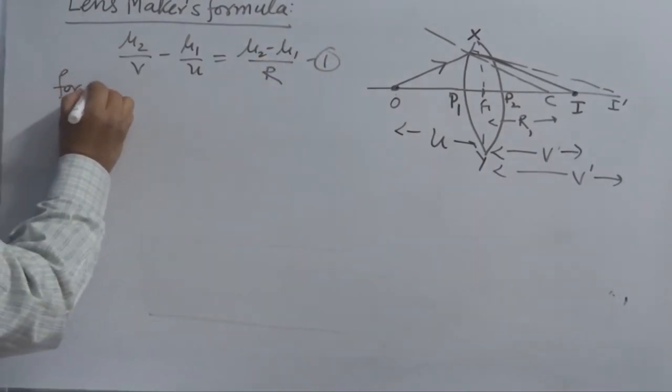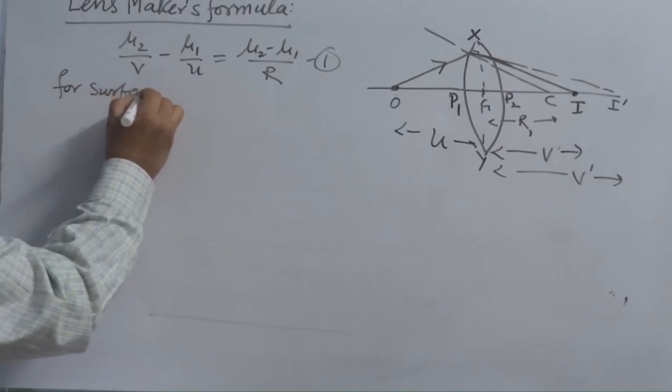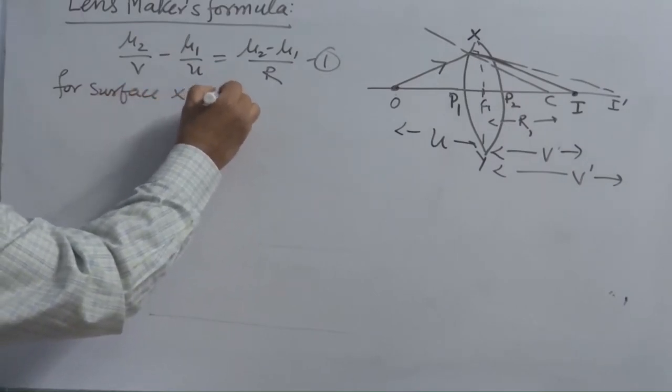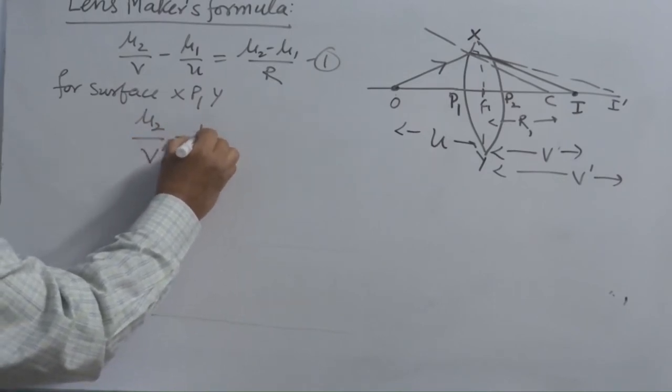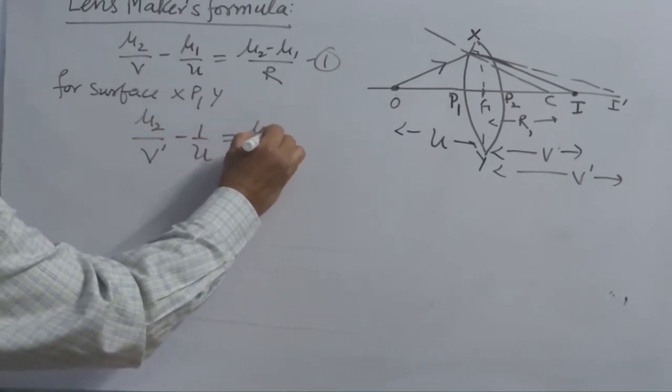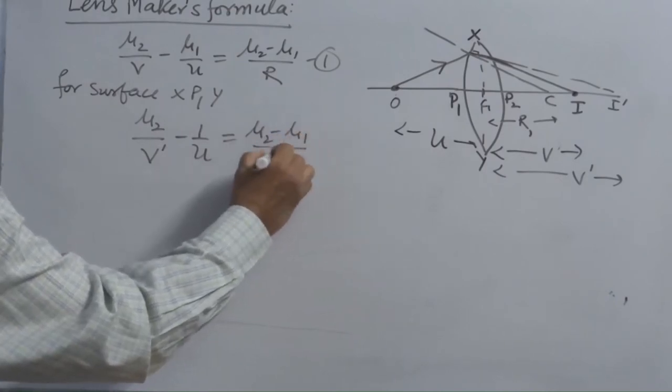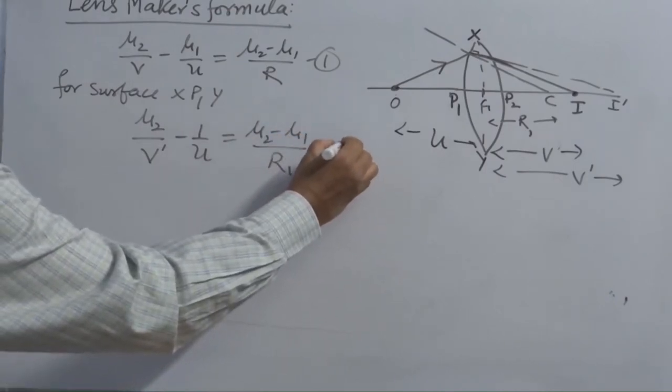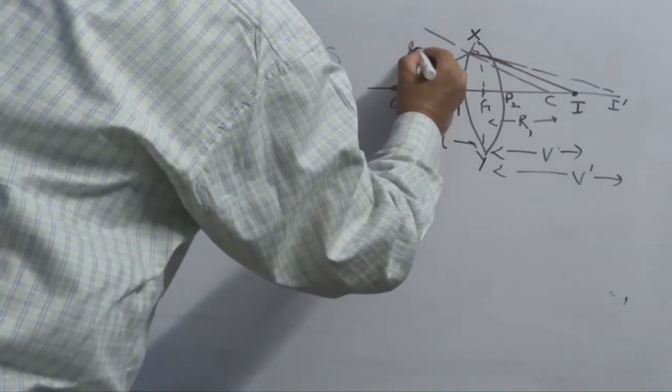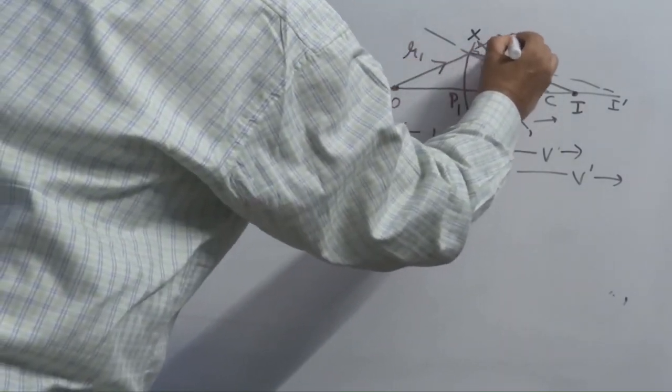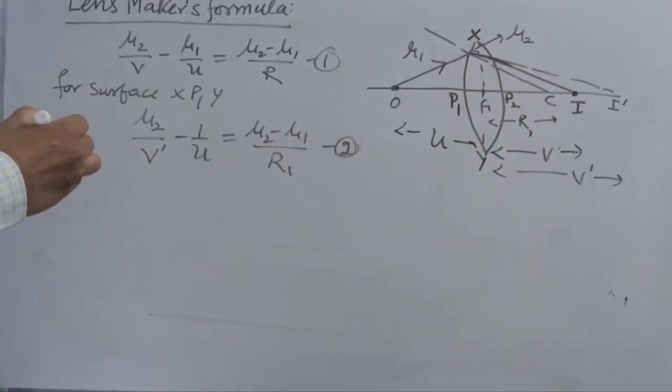Mu2 over V minus mu1 over U is equal to mu2 minus mu1 over R. For surface X, P1, Y, P1, Y. Applying this. This is similarly you can use. Because there is no change in any condition. Here also. Refractive index of the medium of air is mu1 and glass is mu2.